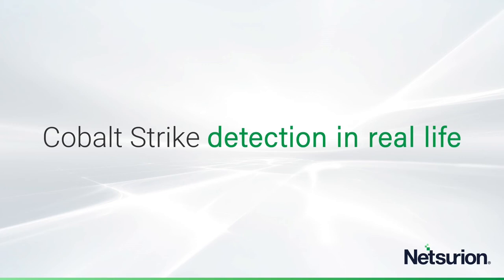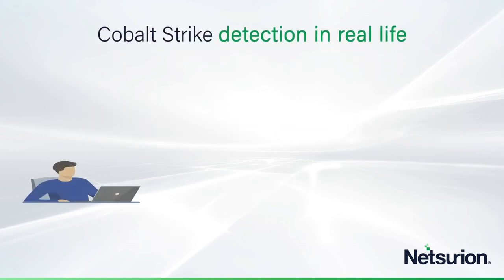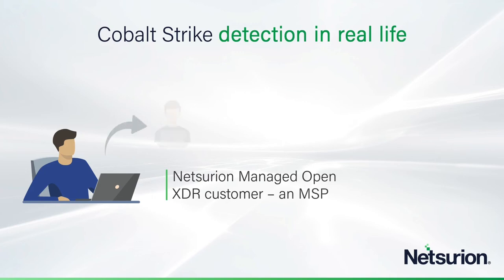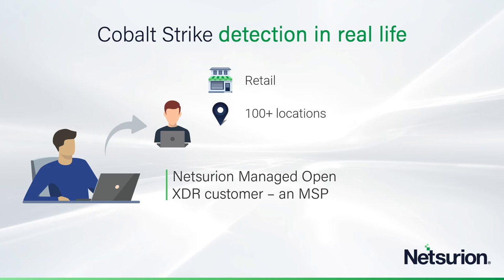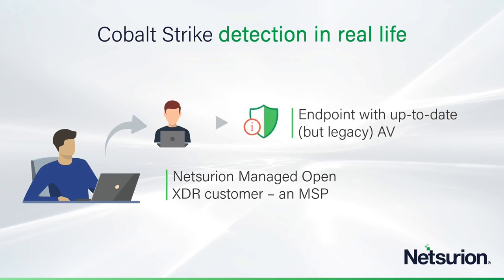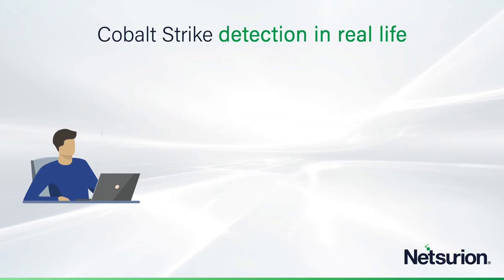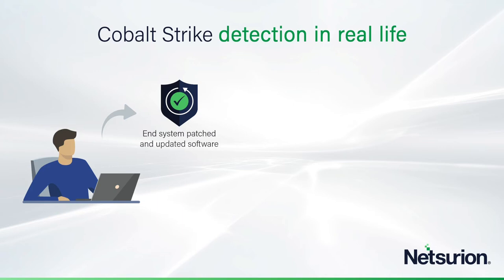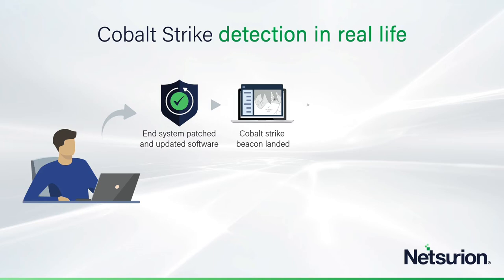So how did we catch Cobalt Strike? Our managed OpenXDR customer was an MSP serving a retailer in the United States with hundreds of locations around the nation and about 2,500 employees. They had invested in endpoint protection, but it was a legacy signature-based antivirus. The MSP had been diligent in making sure end systems were patched and nobody was running out-of-date software. Notwithstanding that, a Cobalt Strike beacon landed on one of the endpoints and began attempting to communicate with its C2 server.